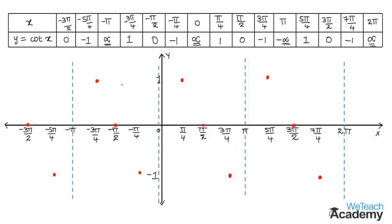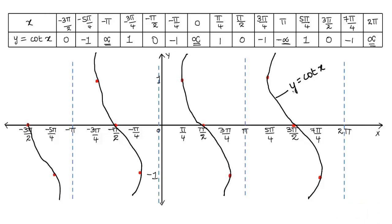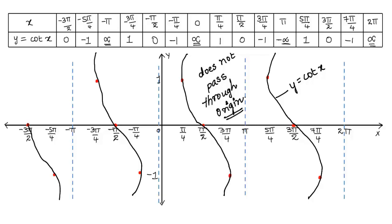By joining all these points we get the curve of y = cot(x). Note that the graph of cot(x) is discontinuous at x = −2π, −π, 0, π, 2π, and so on. Also note that the cot(x) curve does not pass through the origin. This was a basic introduction on how to draw the graph of the trigonometric function cot(x). Hope you understood the concept — do like and subscribe to V-Teach Academy. Thanks for watching, have a nice day.